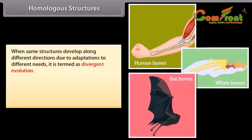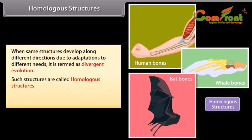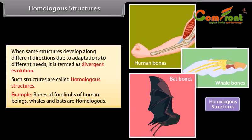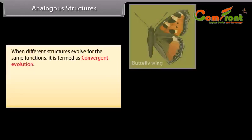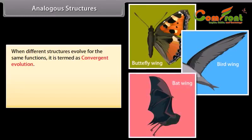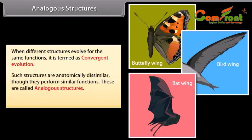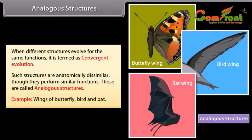Homologous structures: when the same structures develop along different directions due to adaptations to different needs, it is termed divergent evolution, and such structures are called homologous structures. Bones or forelimbs of human beings, whales and bats are homologous. Analogous structures: when different structures evolve for the same functions, it is termed convergent evolution. Such structures are anatomically dissimilar though they perform similar functions — these are called analogous structures. Example: wings of butterfly, bird and bat.